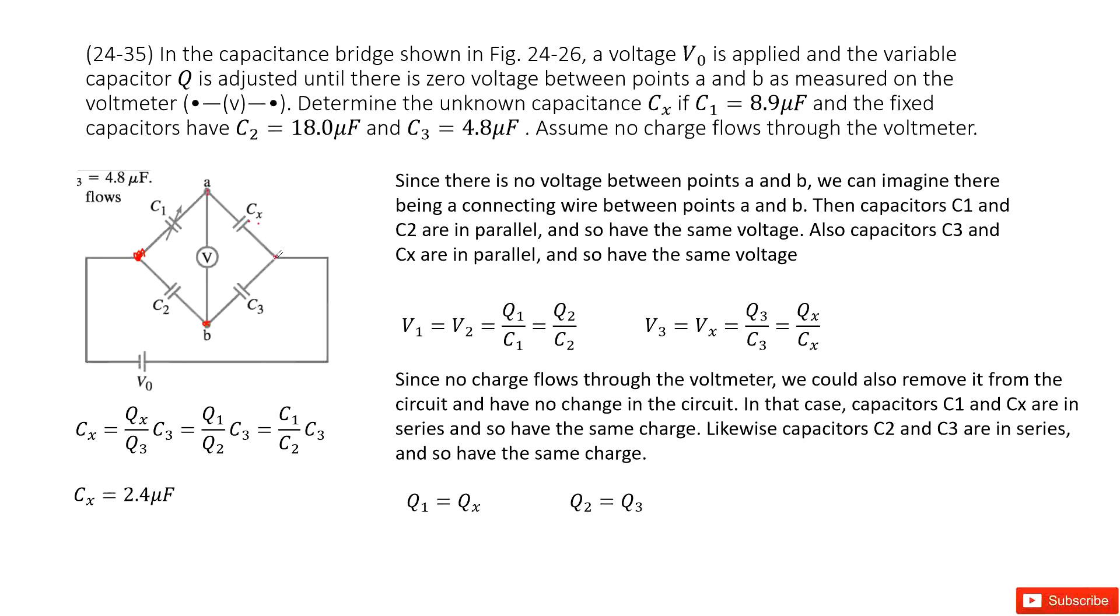Similarly, we can see this point, the voltage equals. And the voltage at A equals voltage at B. So we can see the potential V3 equal to Vx. And then we can write it as the charge Q3 over the capacitance C3 equals the charge Qx over the capacitance Cx.